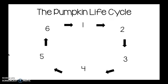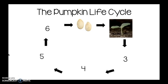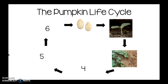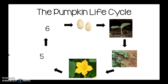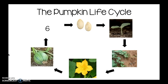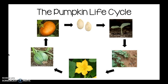Now let's see if we can remember the life cycle of a pumpkin — there are six parts. The first part: seeds. We plant the seeds and they grow into a sprout. The sprout grows and turns into a vine. Then something grows on the vine — yes, a yellow flower. The yellow flower turns into a green pumpkin. And the green pumpkin turns into an orange ripe pumpkin. Ripe means that it's ready to pick.